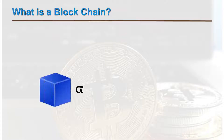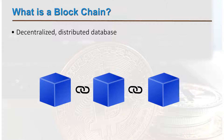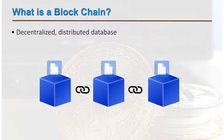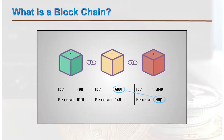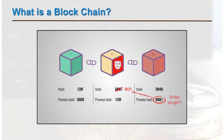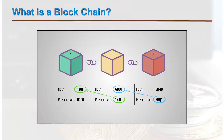A blockchain is a decentralized distributed database used to maintain a continuously growing list of records, fundamentally known as blocks. Each block contains a timestamp and is linked to the previous block by means of a hash pointer. Blockchains are inherently resistant to data modification by design as well as by purpose. Functionally, a blockchain serves as an open distributed ledger capable of recording all transactions between two parties efficiently and effectively.